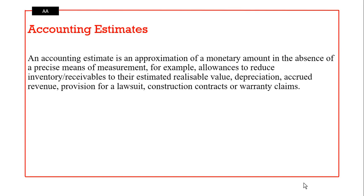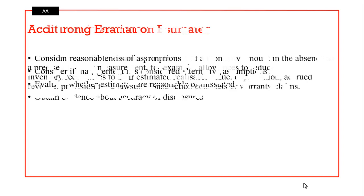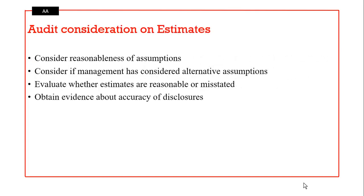An accounting estimate is an approximation of a monetary amount in the absence of a precise means of measurement — for example, allowance to reduce inventory, receivables, estimated realizable value, depreciation, accrued revenue. The auditor must question management's estimates, considering the reasonableness of assumptions made, whether alternative assumptions were considered, whether estimates are reasonable or misstated, and obtaining evidence about the accuracy of disclosures made about the estimates.